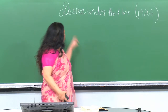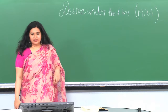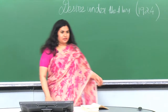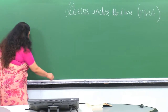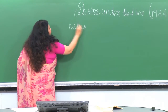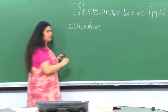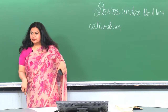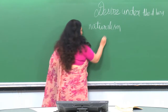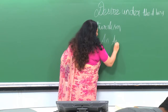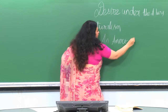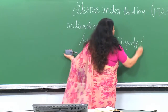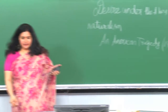This play is Desire Under the Elms by Eugene O'Neill, published in 1924, and strictly speaking it falls under the category of naturalism. A recent work that also conforms to naturalism is An American Tragedy, published in 1925. Both of these are highly naturalistic works.